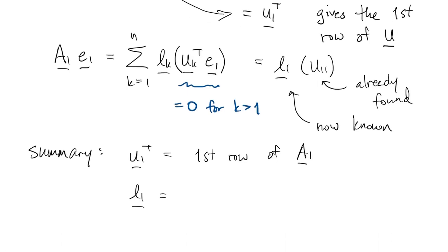So, the first row of A1 gives us the first row of U, and the first column of A1, with a factor, gives us the first column of L.